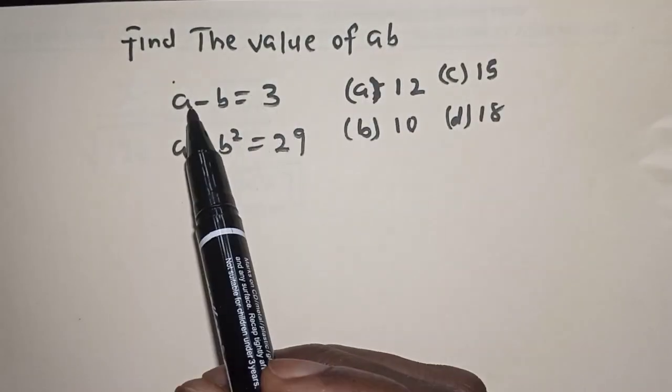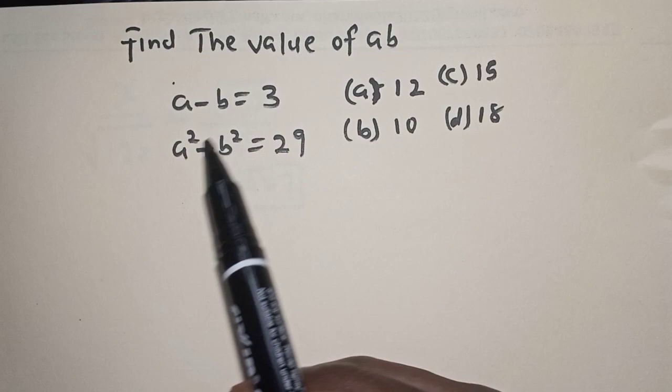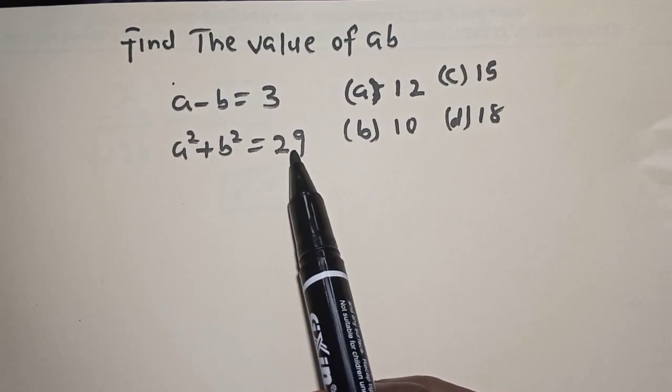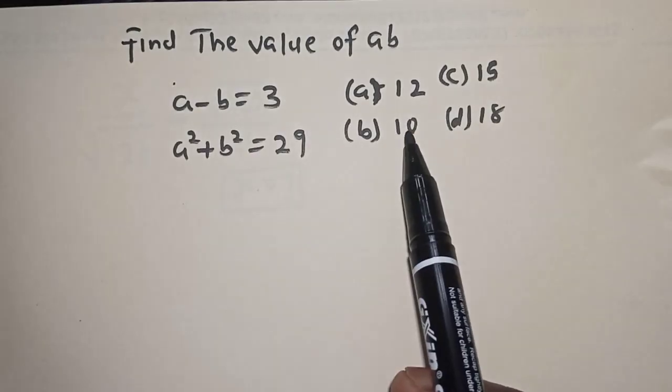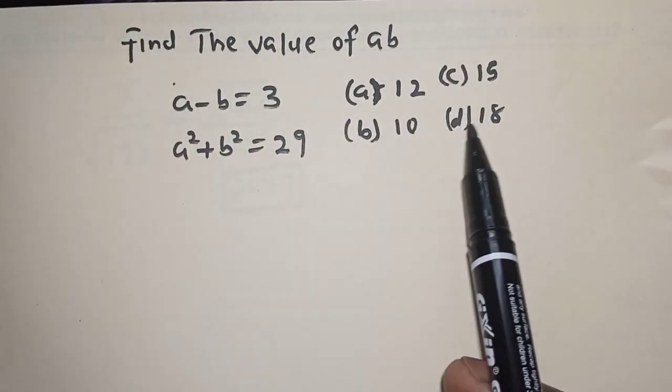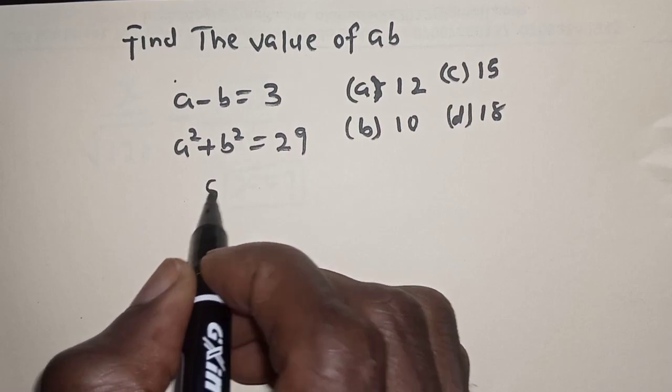Find the value of AB. If A minus B is equal to 3 and A square plus B square is equal to 29, here are the options given: A is equal to 12, B is equal to 10, C is equal to 15, and D is equal to 18.